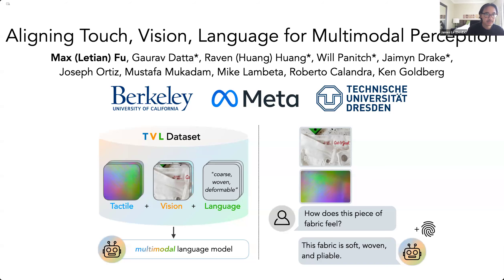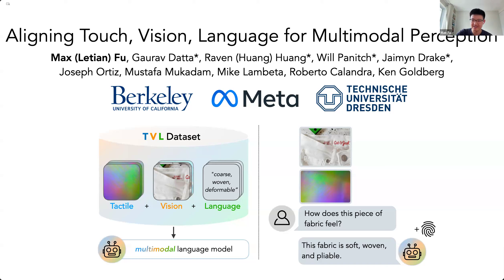I'm Max, a PhD student at Berkeley AI Research under Professor Ken Goldberg. Today I'm excited to present our most recent work on multimodal alignment. This is joint work with Gaurav, Raven, Will, Jamin, Joey, Mustafa, Mike, Roberto, and Ken, and it's a collaboration with Meta and Team Preston.